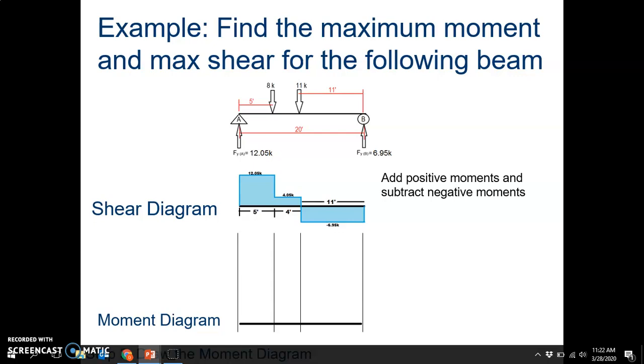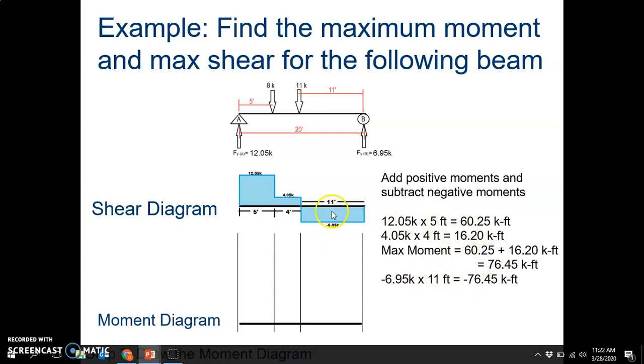Remember, we add positive moments and subtract negative ones. So the two positive ones were 60.25 and 16.2, which gives us, if you add them together, a maximum moment of 76.45. And you might realize that is the same number as the negative one we had before. Because the area above the curve is going to be equal to the area below the curve. That's kind of a way for you to self-check. So the max moment is negative 76.45 or positive 76.45. It doesn't matter. It's the value, the maximum absolute value. The area above is the same as the area below.